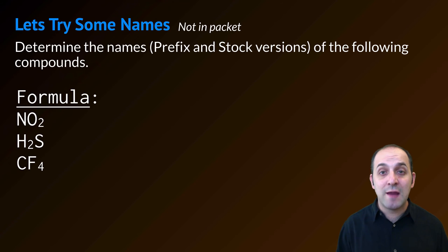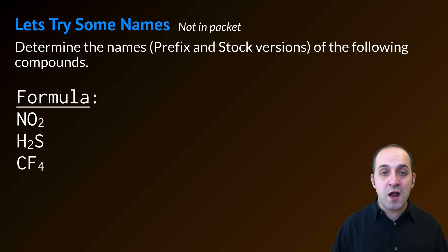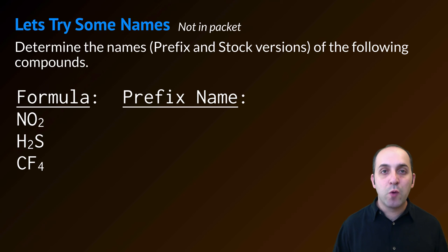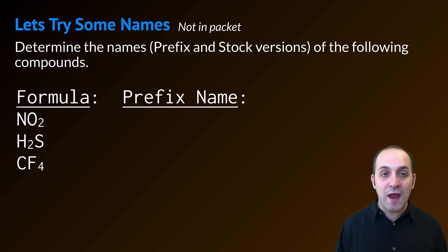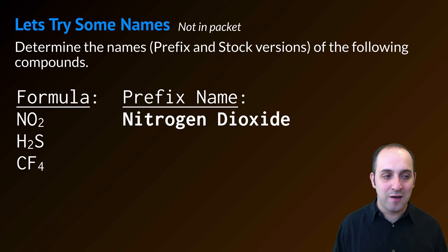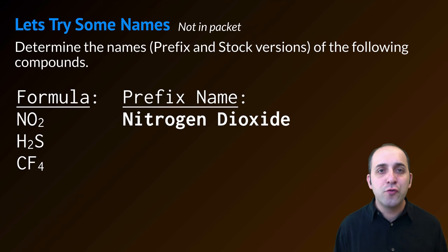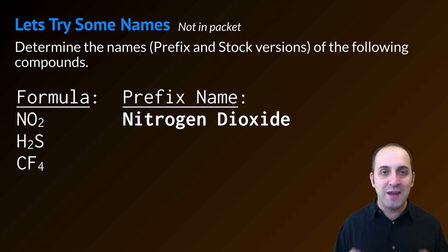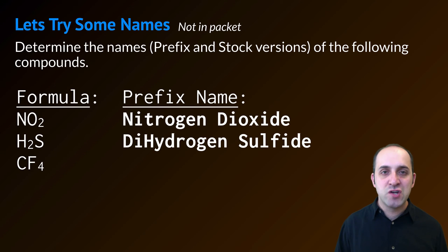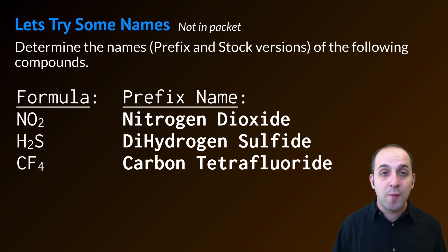Let's try naming some covalent compounds — determine both the prefix name and the stock name for each compound. Pause the video and try it on your own. For the prefix names: NO2 is nitrogen dioxide — one nitrogen and two oxygens. You could call it mononitrogen dioxide but you'll never see that mono prefix used when there's one atom at the beginning. H2S is dihydrogen sulfide, and CF4 is carbon tetrafluoride.